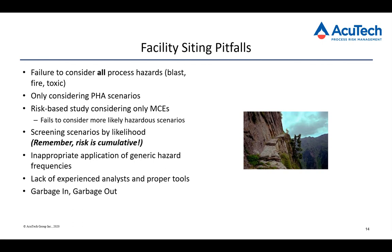As we saw in the poll, a lot of people are doing a combination of consequence and risk, and you have to be very careful when moving from a consequence-based study to a risk-based study. You can't only assess the risk of those MCEs because by nature you've defined those to be less likely scenarios. Another issue is screening scenarios by likelihood — trying to reduce the scope of the study by screening scenarios out as low likelihood. We have to remember that the risk we're looking at in a siting study is cumulative — the risk to a building from all scenarios combined. If we screen out scenarios because we consider them below some likelihood criteria, we are ignoring all of that aggregate risk that together they sum up to.